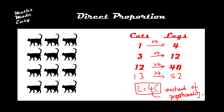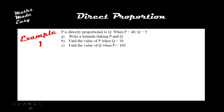Let's have a look at how this might appear in an example. P is directly proportional to Q. This means that as P goes up by a set amount, Q will always go up by a set amount. We're told that when P is 40, Q is 5, and part A says to write down a formula linking P and Q. It may be relatively obvious that Q times 8 gives us P, because 5 times 8 is 40.